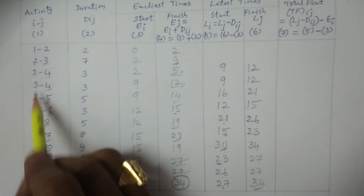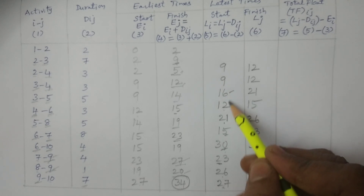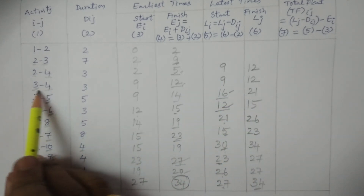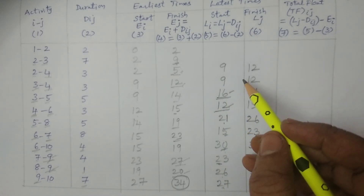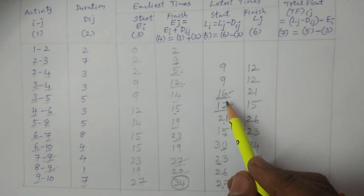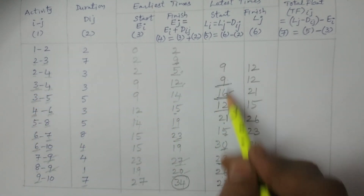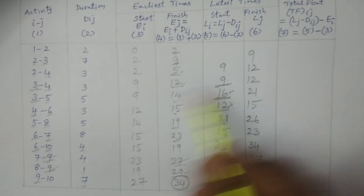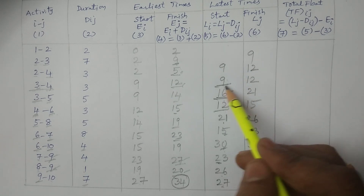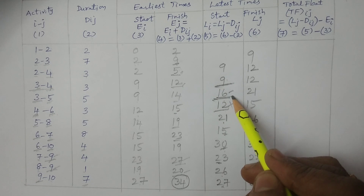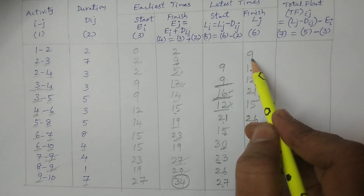For 2 to 3: event 3 has two connections — 3 to 4 and 3 to 5. L3 from 3 to 4 is 9, L3 from 3 to 5 is 16. You must consider the minimum: minimum of 9 and 16 is 9. So L3 equals 9. 9 minus 7 equals 2.